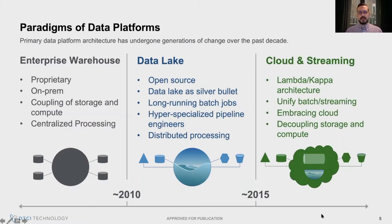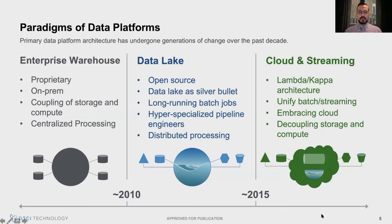It's important to back up and talk about where data platforms have come from. They've been on quite a journey — one I've witnessed in the over nine years I've been at Walt Disney Company. On the left-hand side, you have enterprise data warehouses that tend to be more proprietary, on-premise, centralized, with tight coupling between storage and compute. Then data lakes came into the scene with broader adoption, moving more towards open source, batch jobs, and distributed processing. That was the big paradigm shift — from centralized to distributed. One pattern that evolved out of that was hyper-specialized data engineers: ingest-focused, process-focused, or serve-focused.